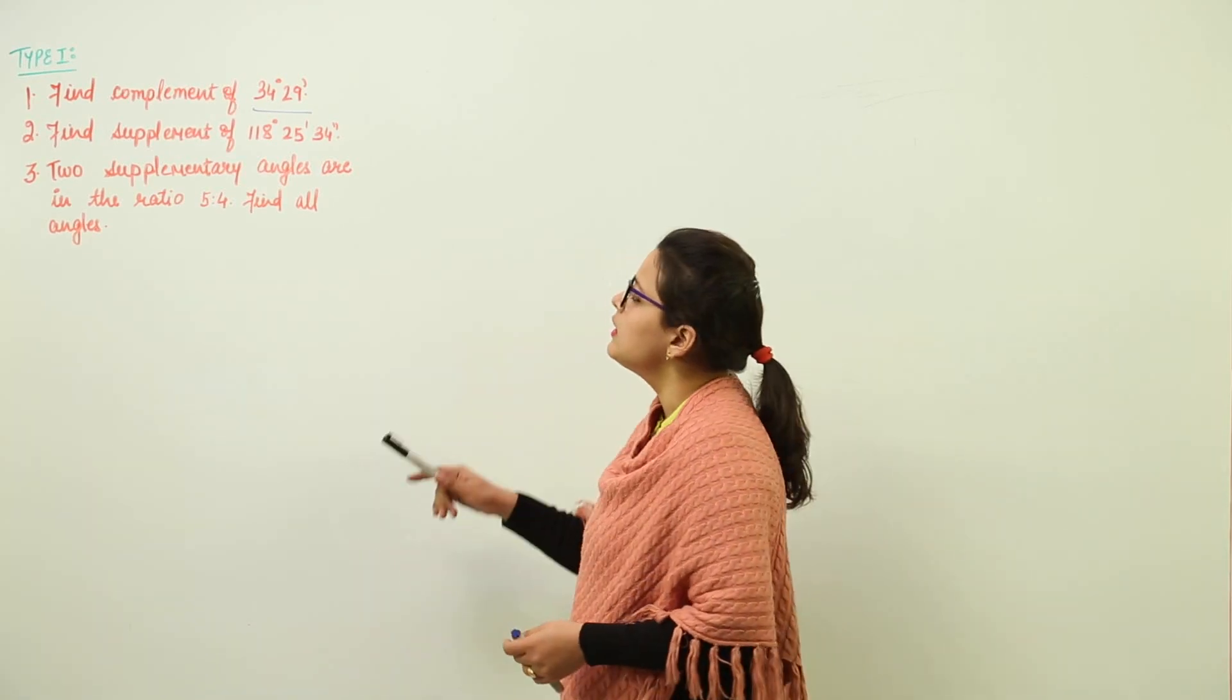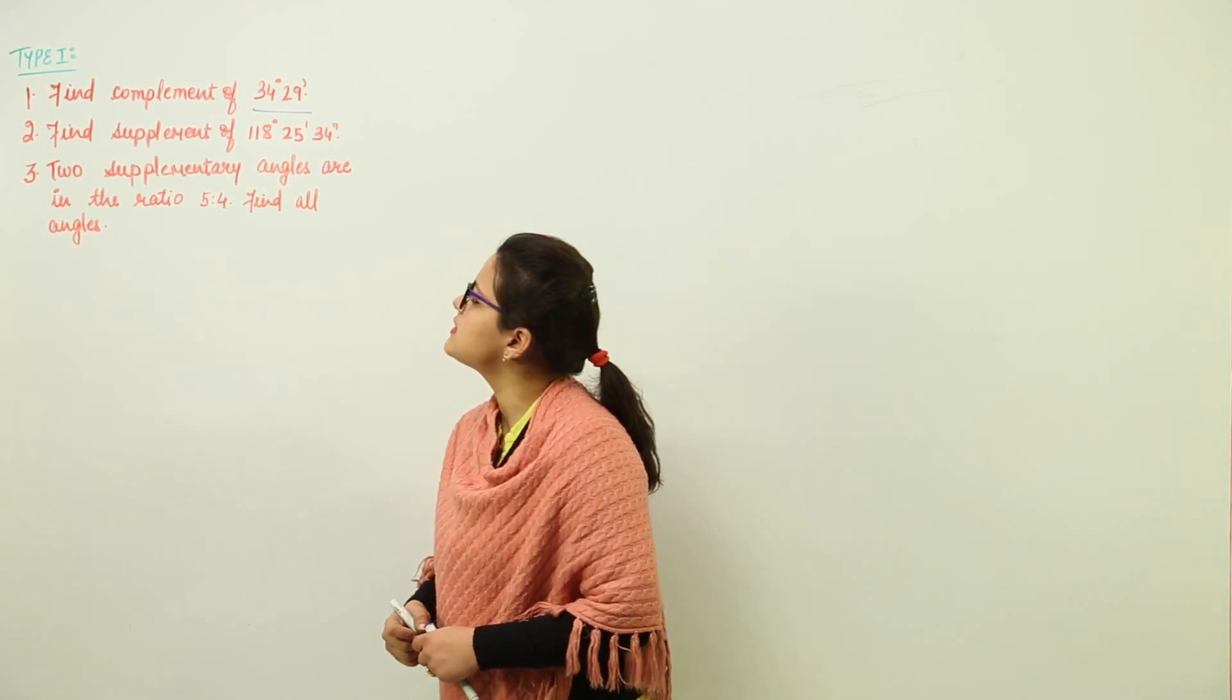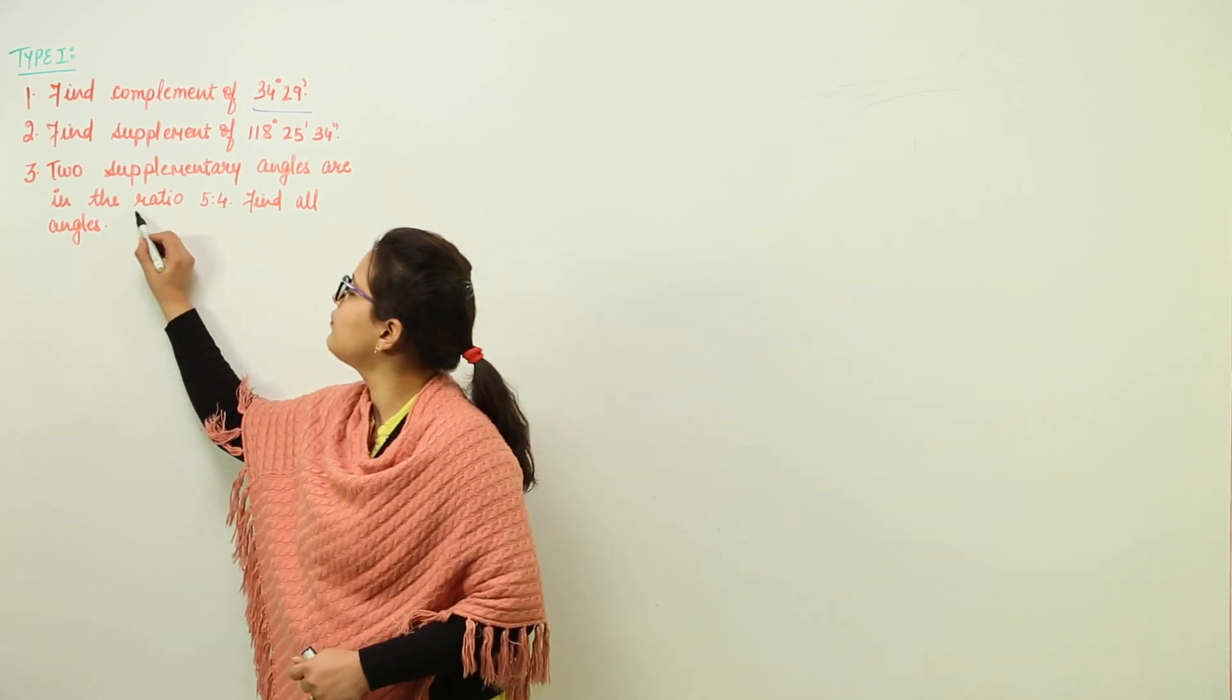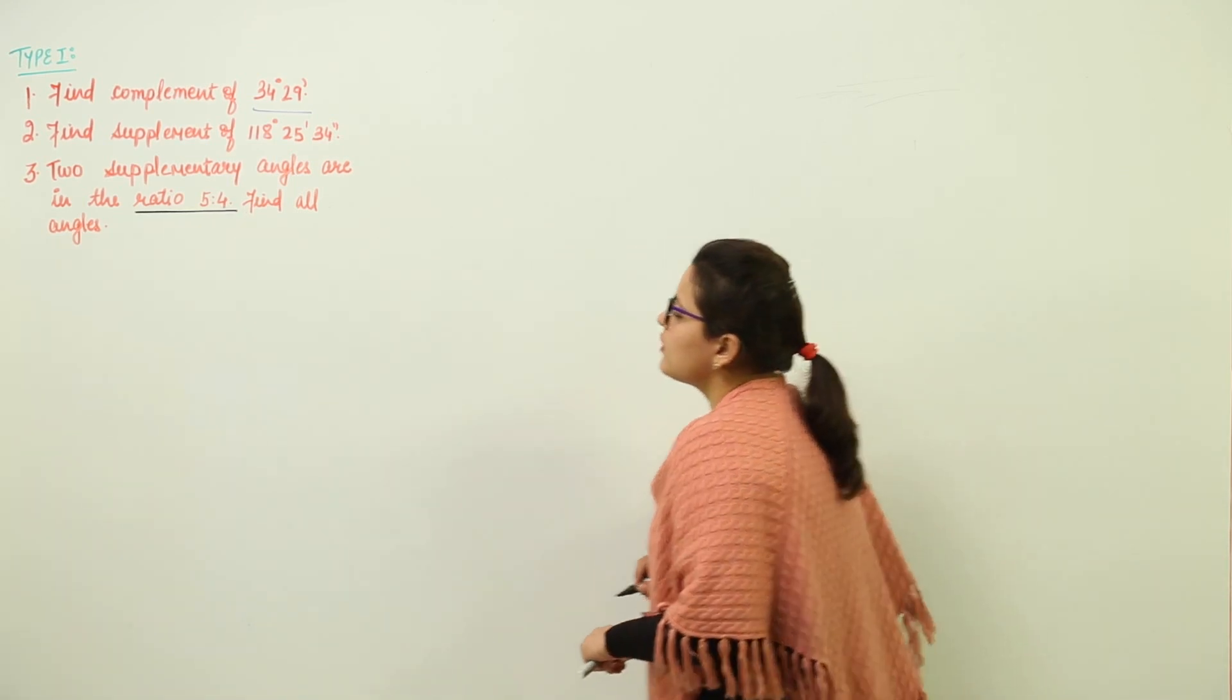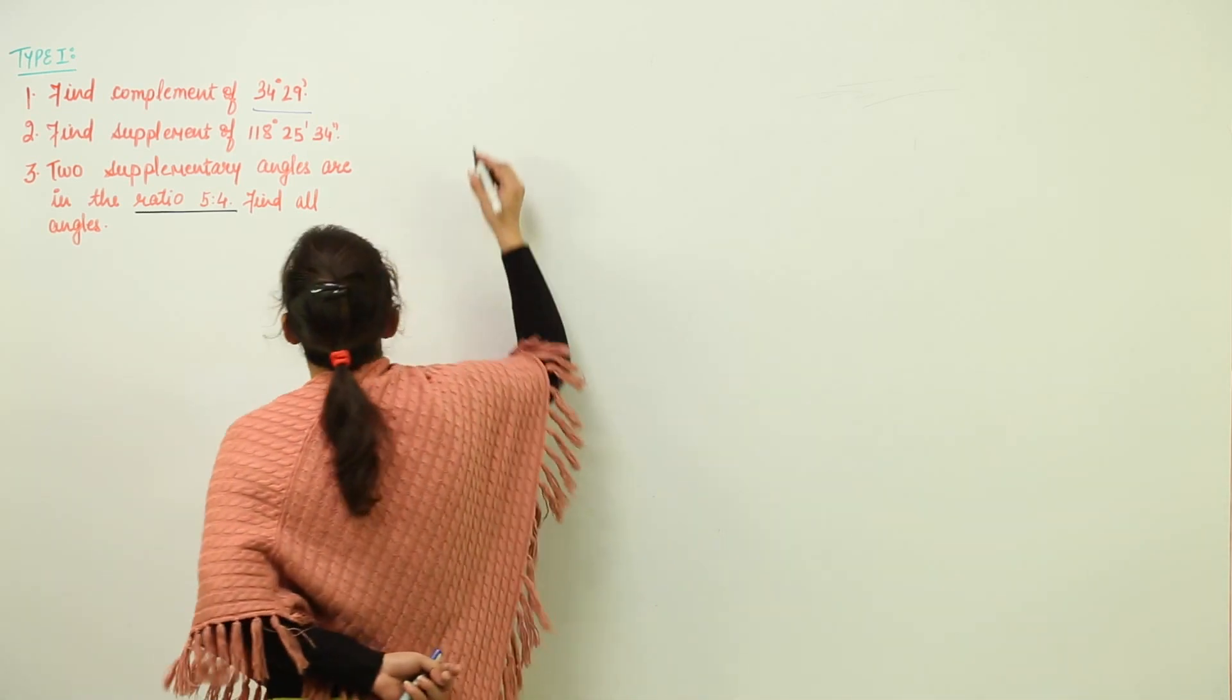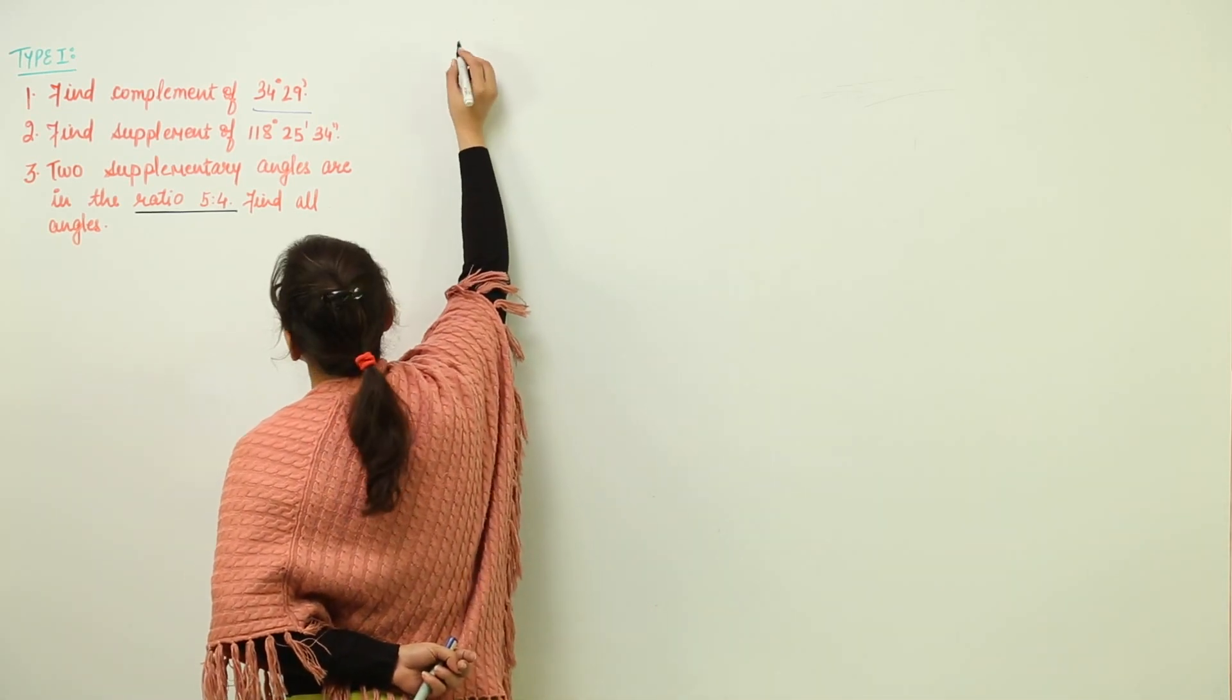Question number three: the two supplementary angles are in the ratio, we have to find all the angles. Now, as we have discussed earlier, the ratio does not represent the actual measurement, so we will assume.